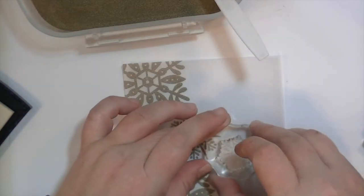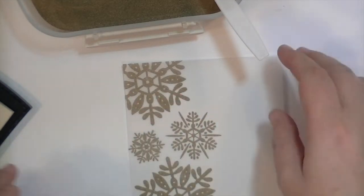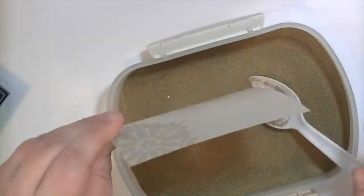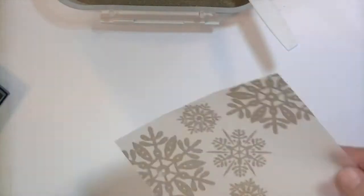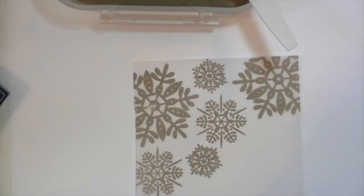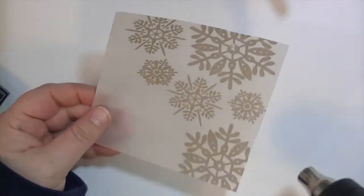And then your clear stamps and some acrylic blocks. I really love using embossed images, especially on vellum, to create like pattern paper, basically, which is what I'm going to do here. And I'm going to end up using this as a photograph mat for a 12 by 12 layout.